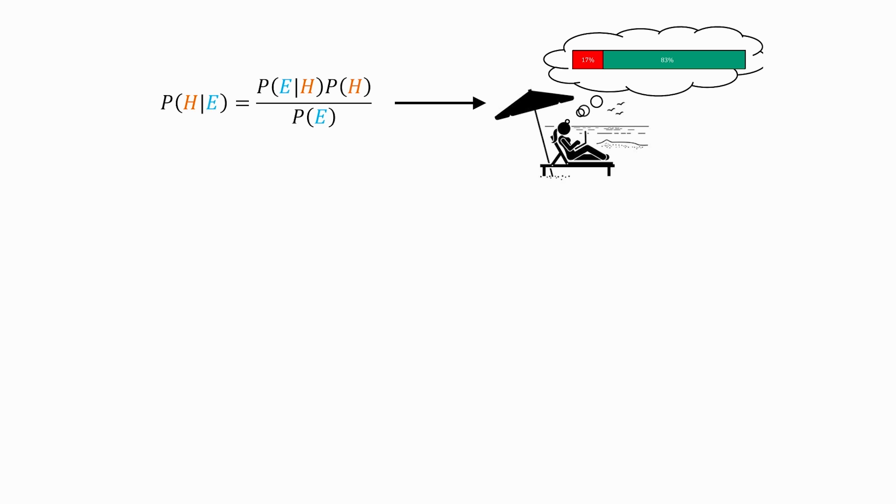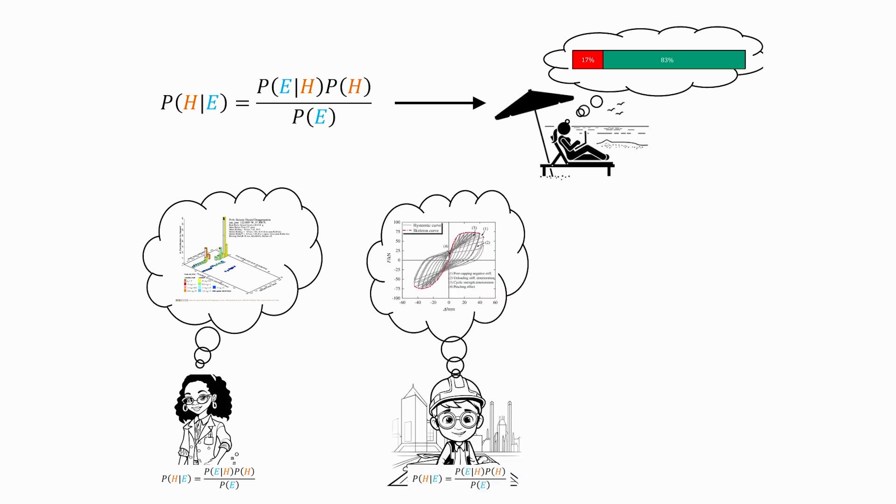For example, in earthquake engineering, we use it for something called seismic hazard disaggregation. That's just a fancy term to describe when we are trying to figure out what characteristics of an earthquake, say, for example, the magnitude, are likely to produce a given level of ground shaking. We also use it to update mathematical models used in structural response simulations.